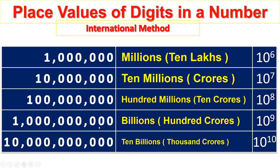Units, tens, hundreds, thousands, 10 thousands, 100 thousands, millions, 10 millions, 100 millions, billions, or 100 crores. 10 to the power of 9.